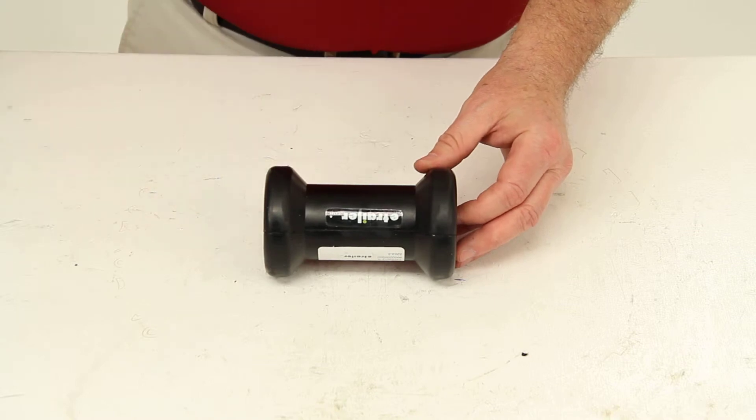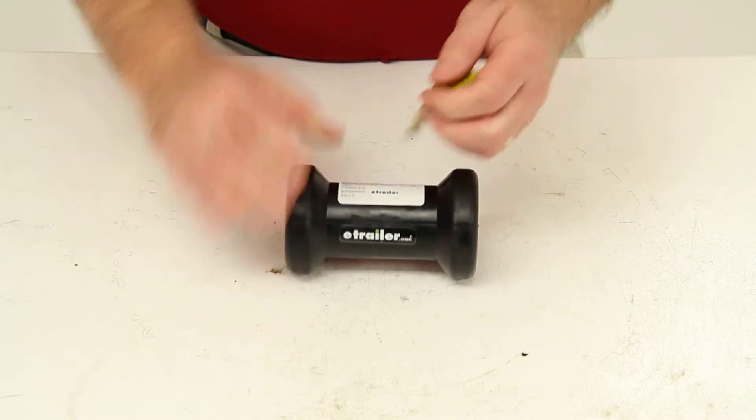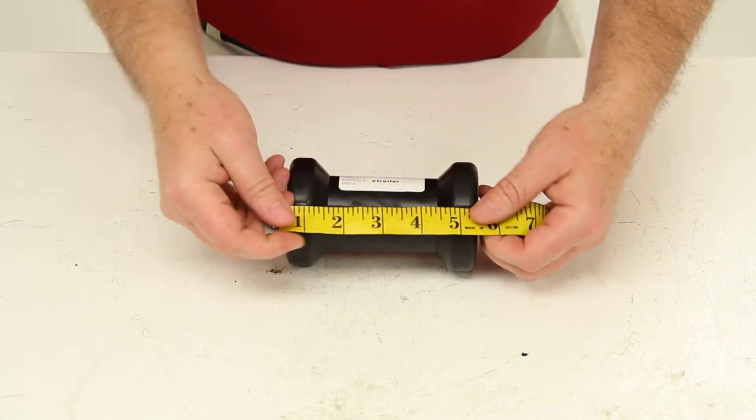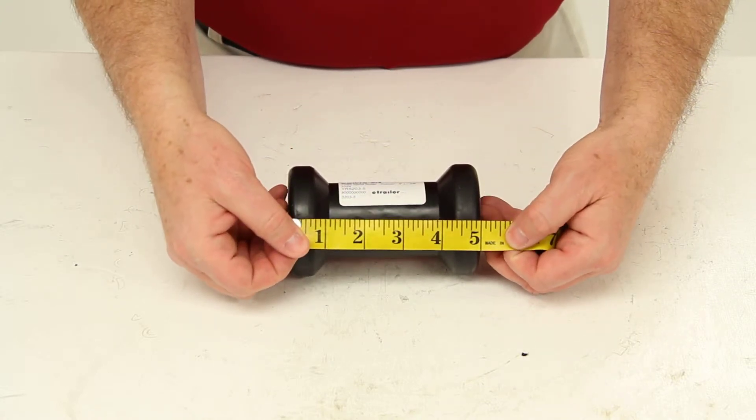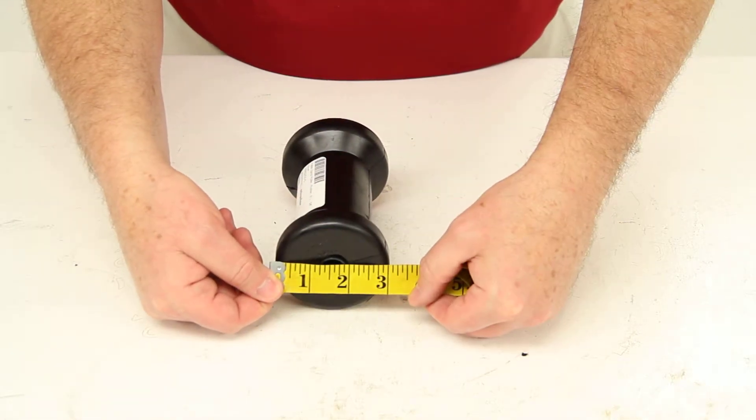I'm going to do a few measurements on this for you. The length of this roller is 5 inches, and the diameter is 3 inches.